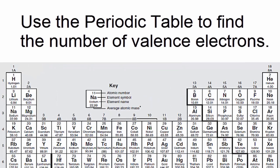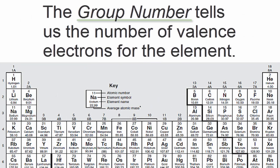We can find the number of valence electrons using the periodic table. The group number tells us the number of valence electrons for the element.